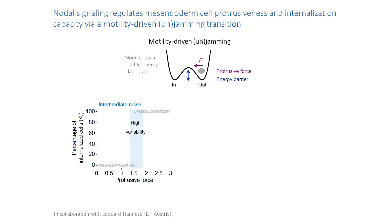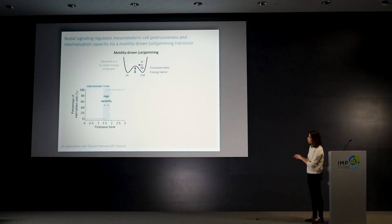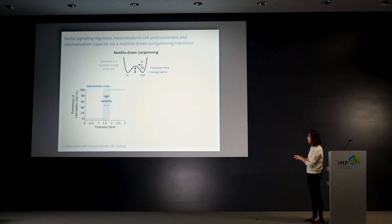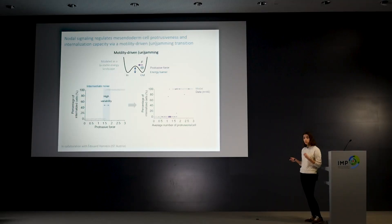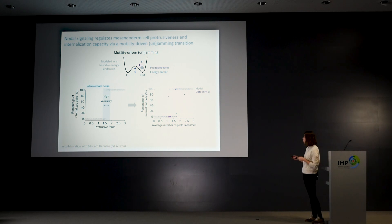When we model this process we get a phase diagram with three regions: when cells have very low protrusive forces they never go in, when they have very high protrusive forces they always go in, and around the critical point at around 1.5 things become very variable — even close to the threshold, noise can allow you to transition or get you stuck. This fits well with our data: cells with very low protrusions never make it, and cells with very high protrusions essentially always make it.